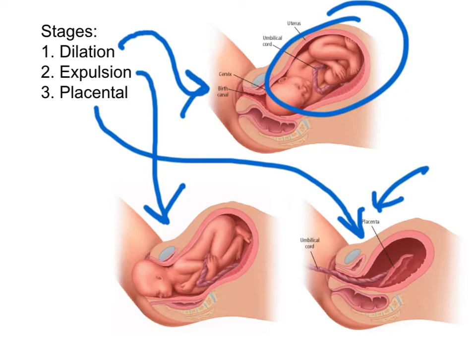Sometimes, however, there are complications that result in a need for an incision to be made through the uterus, and the baby is actually then just removed from the mother's body. This is called a cesarean section, or a C-section.